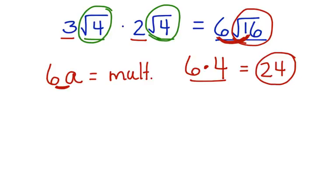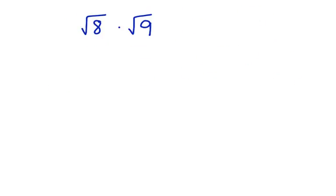Let's look at another one. Here we have the square root of 8 times the square root of 9. Now there's only the square roots to multiply. We don't have numbers in front. So we can just work with the square roots.